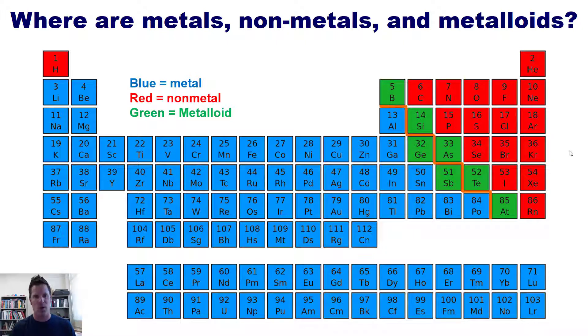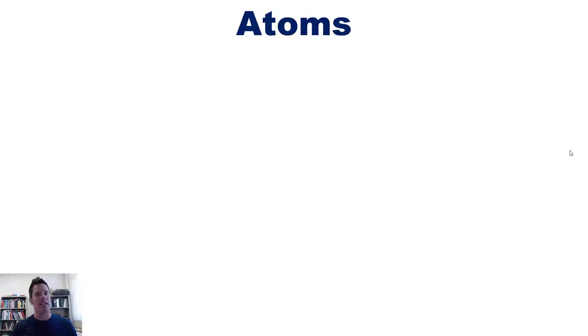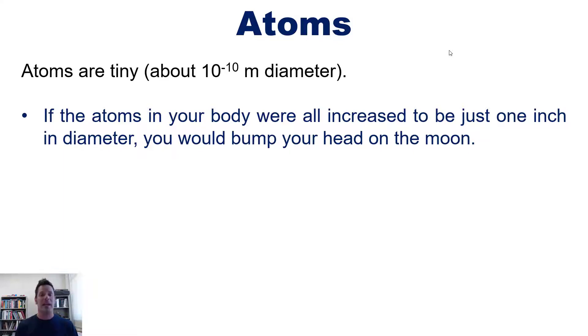We now move on to explain the beautiful intricacies of atoms. We defined atoms in an earlier video linked to in the description below, but I'm going to tell you more information about them here. Atoms, as it turns out, are super tiny - about 10^-10 meters in diameter. That's 0.0000...a bunch of zeros and a 1 meter, so very, very small. As it turns out, if the atoms in your body were all increased to be just one inch in diameter, you would be able to bump your head on the moon - you'd be that large.